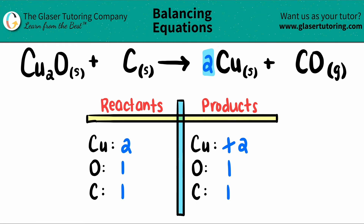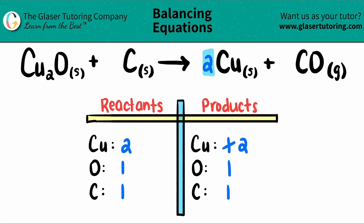So my equation is balanced. The balanced equation is one Cu2O plus one C, one carbon. And that will yield two Cu plus one carbon monoxide, one CO.